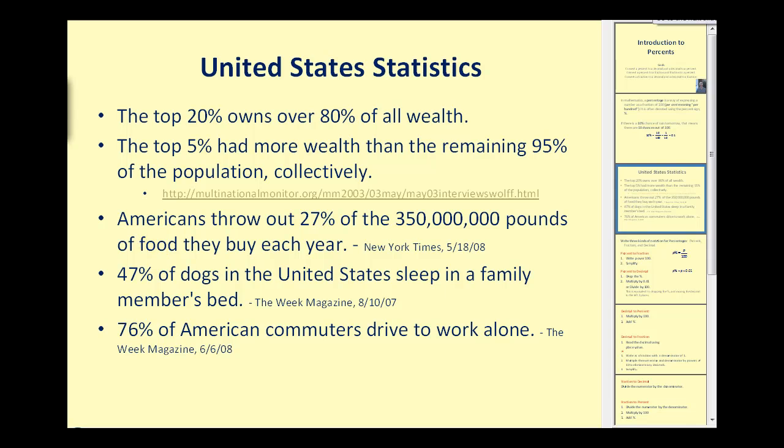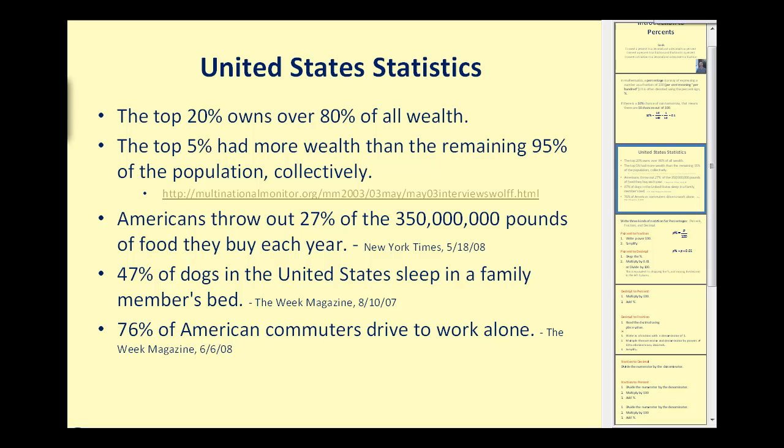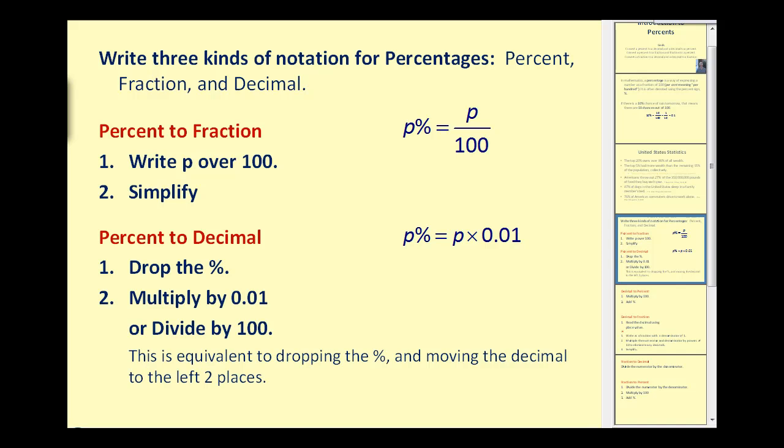Let's go ahead and take a look at how we're going to convert between percentages, decimals, and fractions. To convert from a percent to a fraction, we write the number of the percent over 100 and then simplify. So for example, if we have 15 percent, in fraction form that would be 15 over 100. Notice how we drop the percent sign. And this does simplify. There's a common factor of 5. This is equal to 3 twentieths. So it is important that when we convert our percentages to fractions that we also simplify.